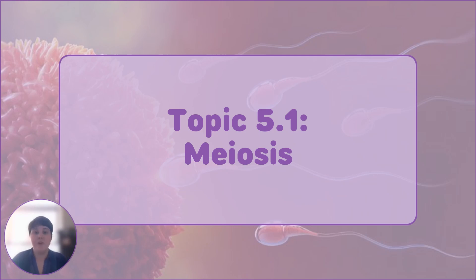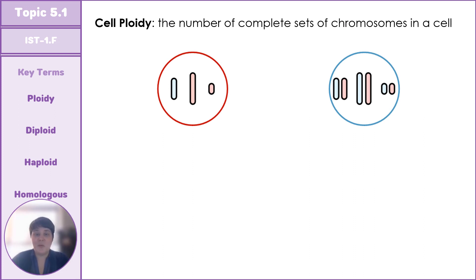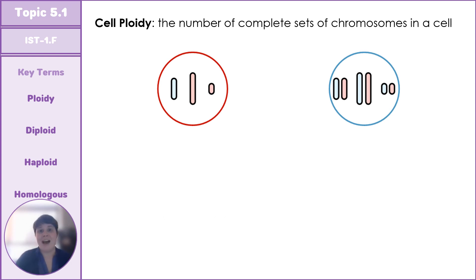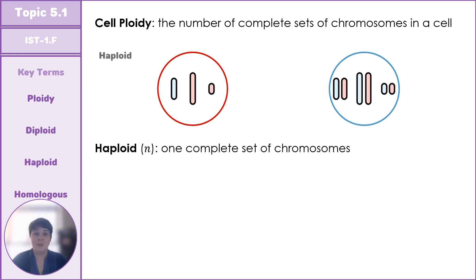The first thing we're going to talk about is the number of chromosomes that we find in cells. One of the ways we can describe chromosomes within cells is through the concept of ploidy. Ploidy refers to the number of complete sets of chromosomes in a cell. Humans and other animals have one type of cell called a haploid cell, which has only one set of chromosomes — half of the full genetic information of an organism.